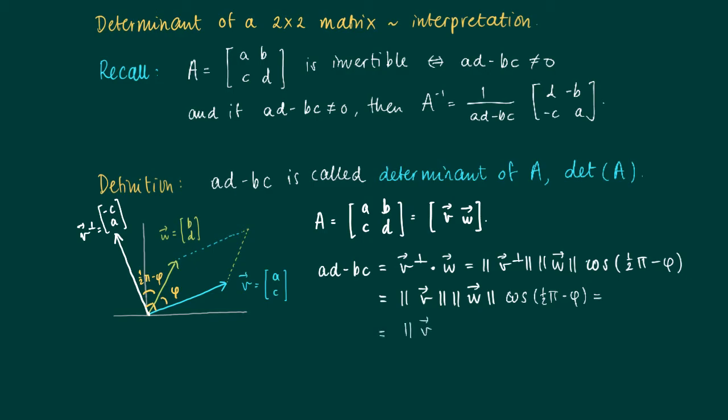And this equals the length of v times the length of w times sin(φ). Well, the conclusion is that ad minus bc equals ||v|| ||w|| sin(φ). Since the absolute value of this is the area of the parallelogram spanned by v and w, the determinant is actually the area spanned by the columns of matrix A.